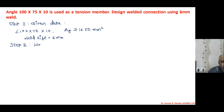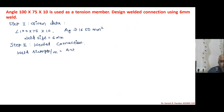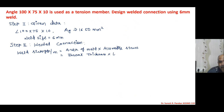We go directly to the welded connection. Step two: weld strength per millimeter, which is equal to area of weld multiplied by allowable stress. Area of weld is throat thickness into length of weld, and allowable stress is fu upon (root 3 × γ_mw).